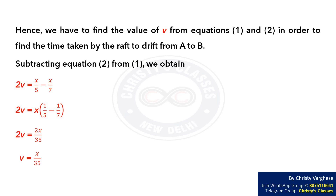Subtracting equation 2 from equation 1, we obtain 2V equals X by 5 minus X by 7. Taking out X on the right, we get 2V equals X times (1 by 5 minus 1 by 7). On taking the LCM on the right, we get 2V equals 2X by 35. This implies V equals X by 35.